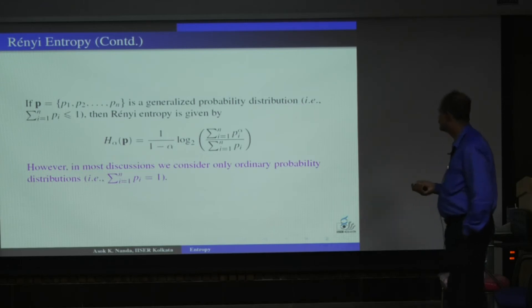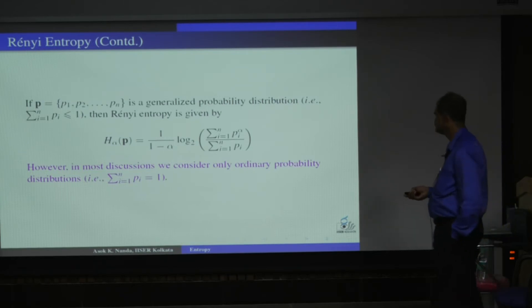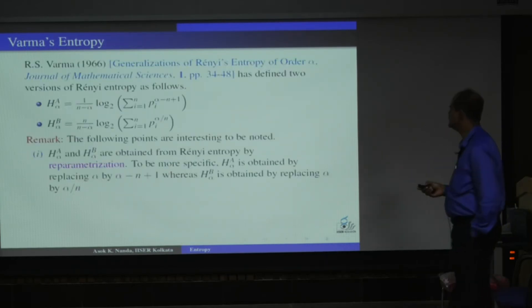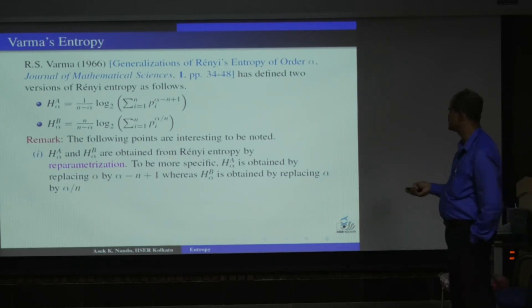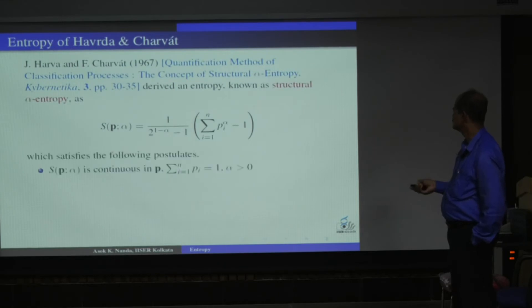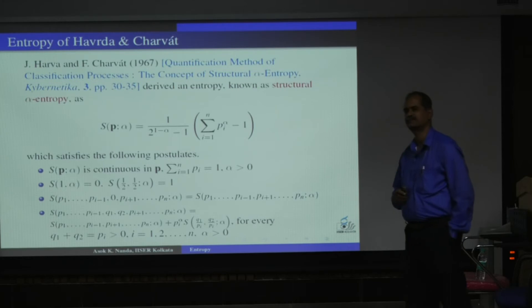Actually, Rényi did not for your probability distribution, but this is called for a generalized probability distribution. If sigma Pi is less than 1, then also we can define entropy, and this is the way actually Rényi started. This is something, again, Varma has defined just by re-parameterization, so I do not want to give time on that. But you see, Havrda and Charvát, they have defined this kind of entropy, with these are the different set of postulates. So there are different kinds of postulates, and we are getting different kinds of entropy.